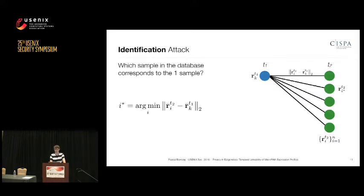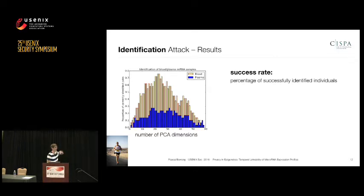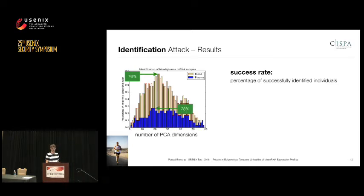The graph shows on the x-axis the number of PCA dimensions m we choose, and on the y-axis the success rate — the percentage of successfully identified individuals. The blue bars show the success rate for plasma-based samples and the red bars for blood-based samples. We can achieve a success rate of up to 76% on the blood-based samples, while the success rate for plasma-based samples is lower, around 30%.